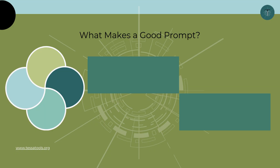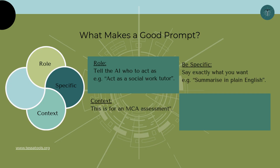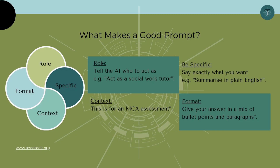Good prompts don't happen by accident. They're specific rather than vague. They give context about the task and the audience. They can assign a role, such as asking the AI to act as a practice educator or as a student. They set a format, such as bullet points or short paragraphs. And they're refined step by step until the result fits the need. These small tweaks make a big difference.